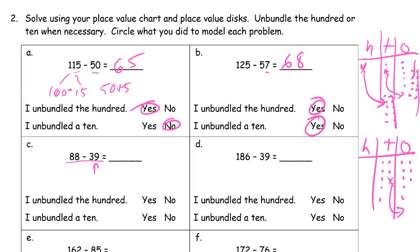I unbundle a 10 into 10 more ones, then cross out 9 ones, leaving 1. Now I cross out 3 tens — I have enough tens for that. What's left: 4 tens and 9 ones, which is 49. I didn't have a 100 to unbundle, so no. But I did unbundle a 10.